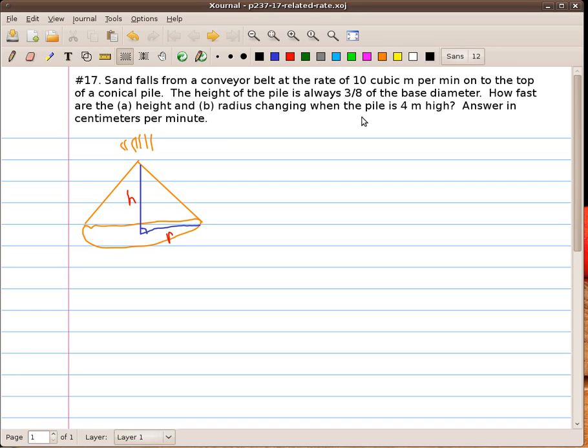In this video we're going to be solving a calculus related rates question using our implicit differentiation. The statement of this problem reads: sand falls from a conveyor belt at the rate of 10 cubic meters per minute onto the top of a